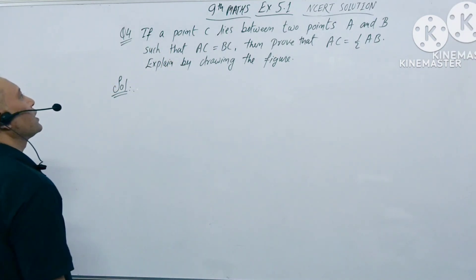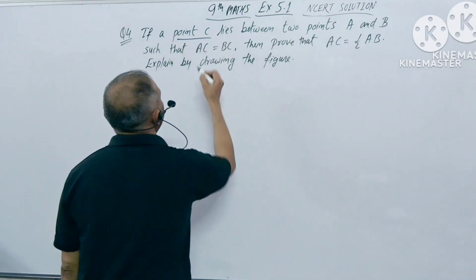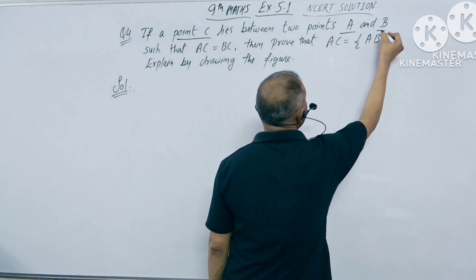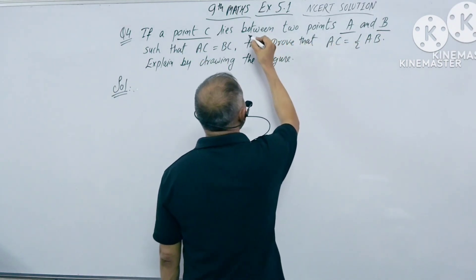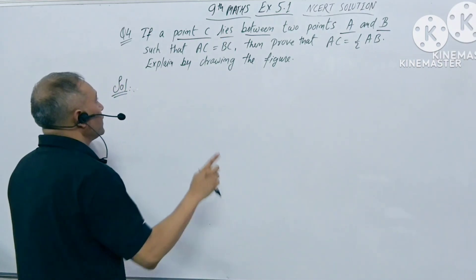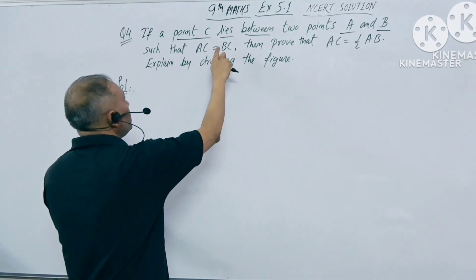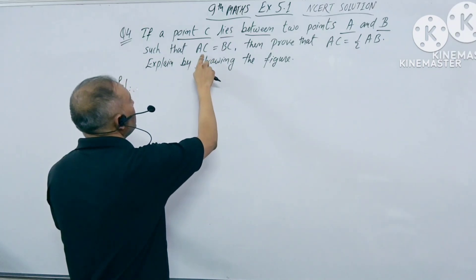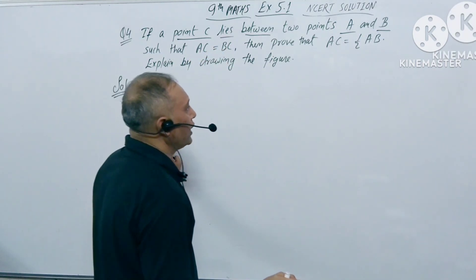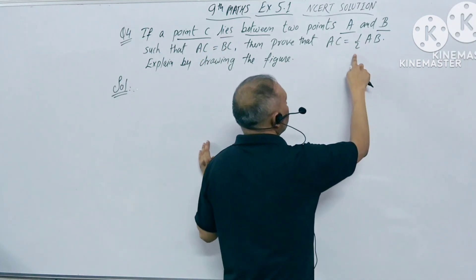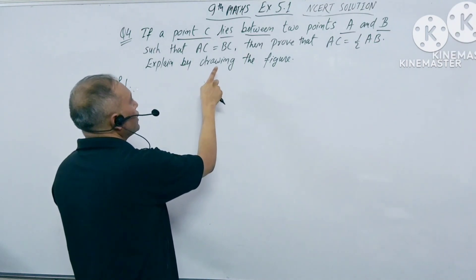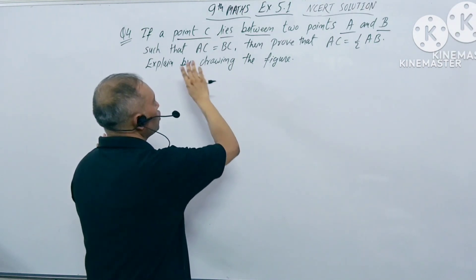In the question, we are given that a point C lies between point A and point B, and the distance from A to C and from B to C is equal. We have to prove that AC is half of AB, and we have to explain this by drawing the figure.